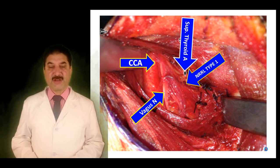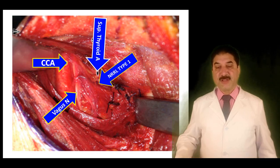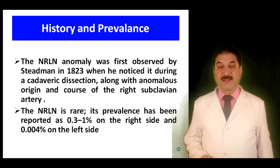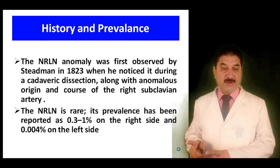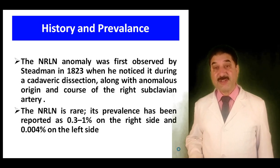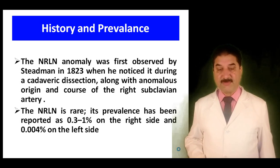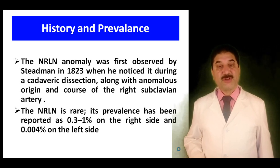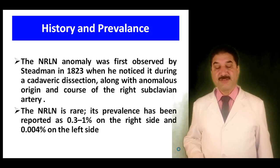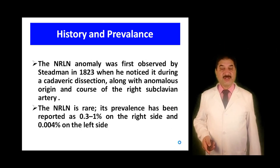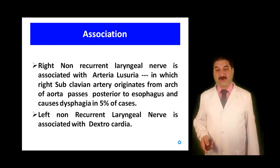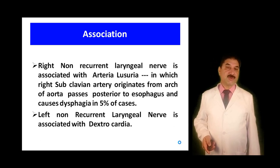Looking at the history of the non-recurrent laryngeal nerve: this anomaly was first observed by Steadman in 1823 during cadaveric dissection, along with anomalous origin and course of the right subclavian artery. The non-recurrent laryngeal nerve is very rare, which is why it poses a challenge to surgeons; its prevalence has been reported as 0.3 to 1% on the right side and 0.004% on the left side. The right non-recurrent laryngeal nerve is associated with arteria lusoria, in which the right subclavian artery originates from the arch of the aorta and passes posterior to the esophagus, causing dysphagia in 5% of cases.